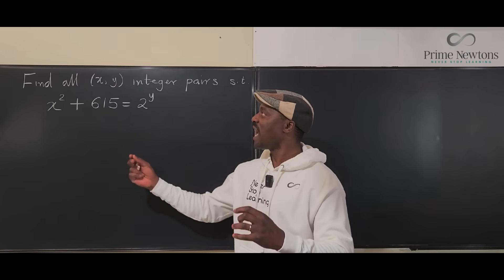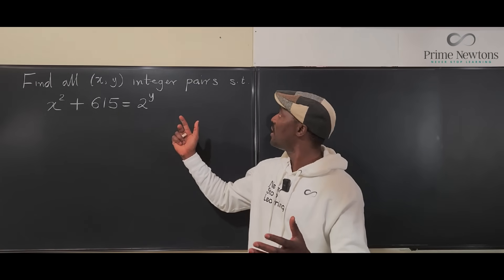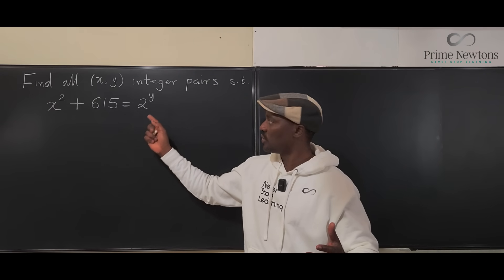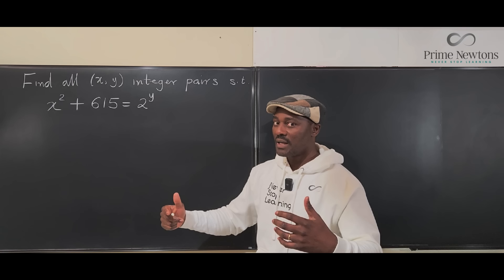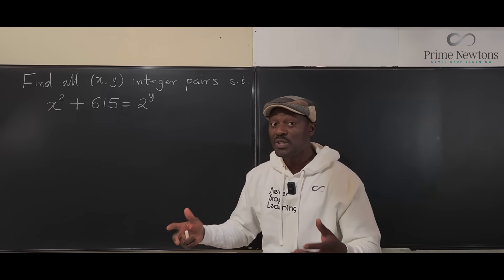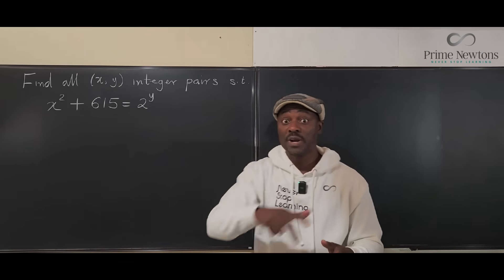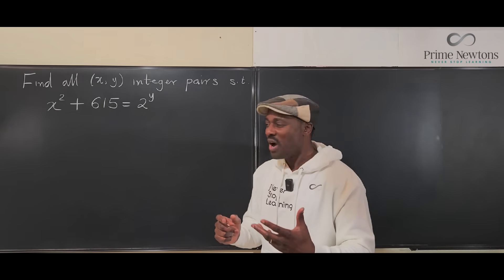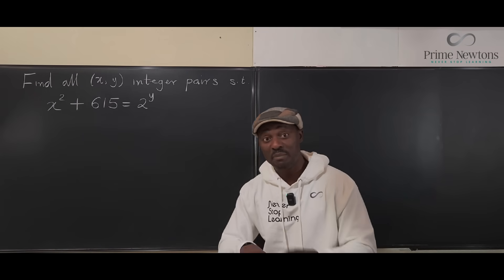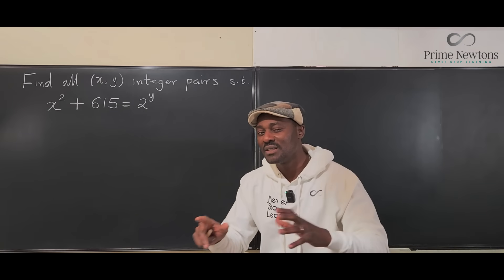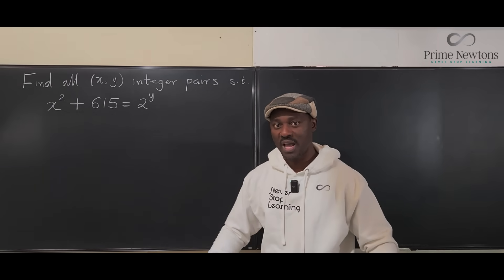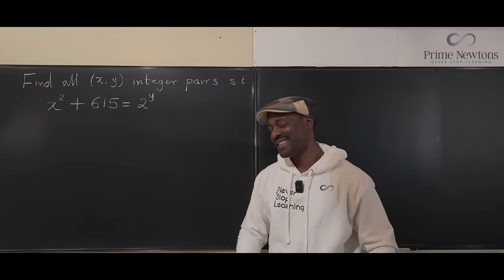Now, we want to find all xy integer pairs such that x² plus 615 is a power of 2. We just don't know what power it is. Like I always say, you never know how many answers you're supposed to get. A safe way to restrict your wanderings is to think of what x cannot be or what y cannot be, or the minimum or maximum they might be. Those are the conditions we're going to apply to find all the answers without missing any. Let's get into the video.